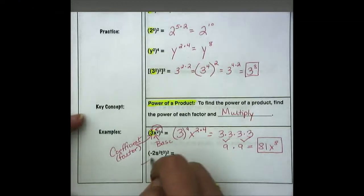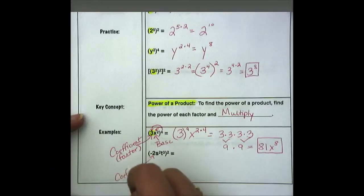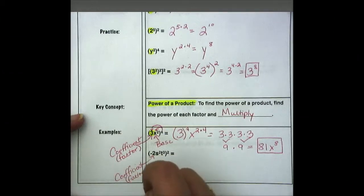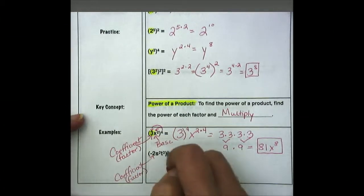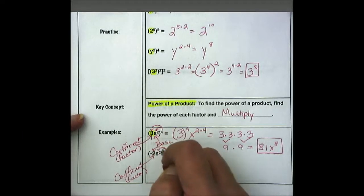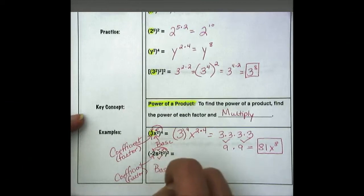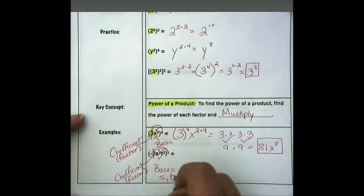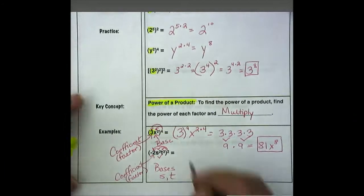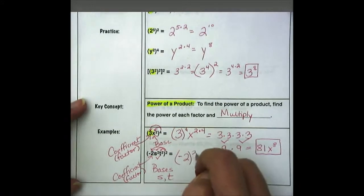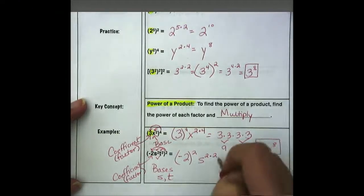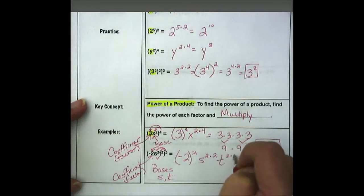Now on the next one, we have negative 2 as our coefficient or factor. We're going to take the exponent and multiply it or apply it to everything on the inside of the parentheses. We have two bases, s and t. So we'll take negative 2 to the 2nd power, s to the 2nd times the 2nd, t to the 3rd times the 2nd.